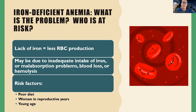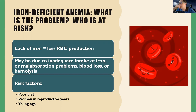A lot of times it's due to people not taking in enough iron in their diets. It can also be due to issues with not absorbing iron. It's also really common in women in their reproductive years — it's common for them to get it because of blood loss, since every month they lose blood with their period. Sometimes it's just from blood loss alone, and sometimes a combination of poor diet and blood loss leads women, especially young women, to be more at risk for this type of anemia.